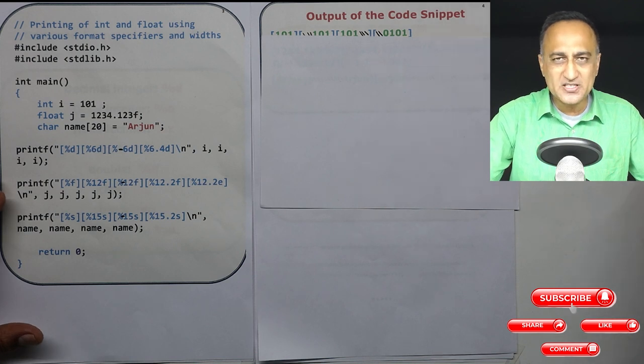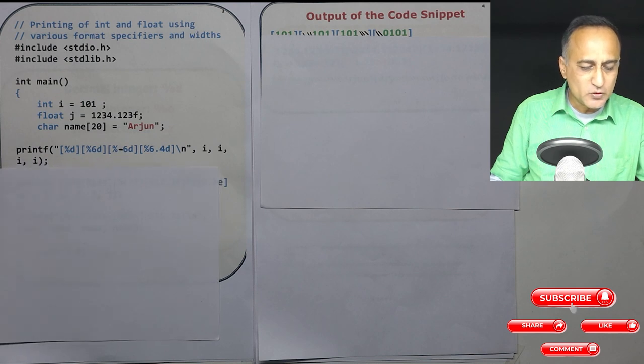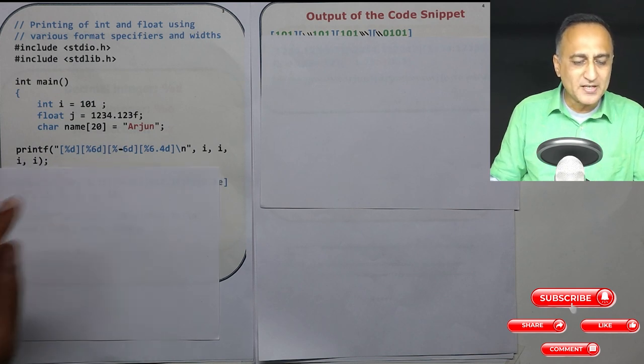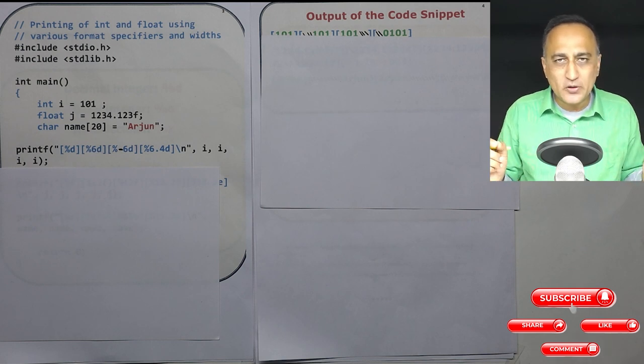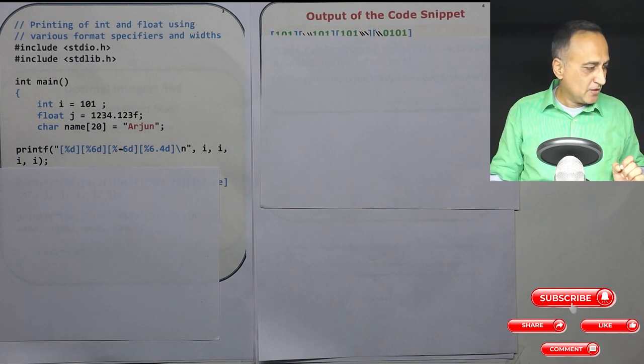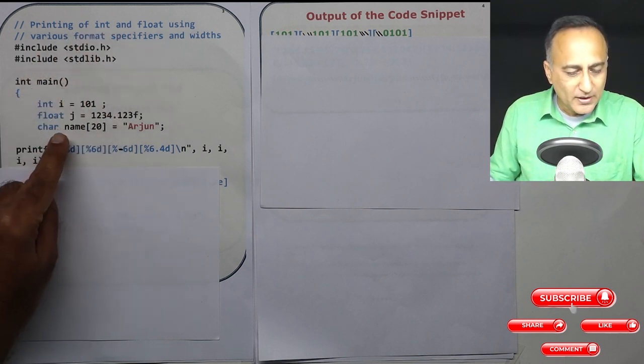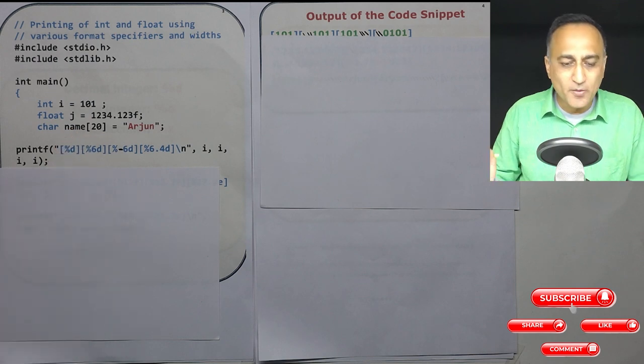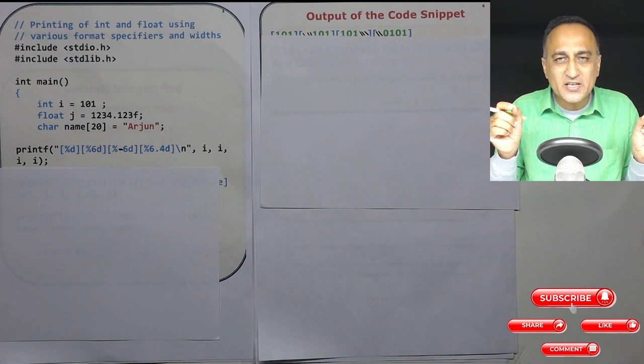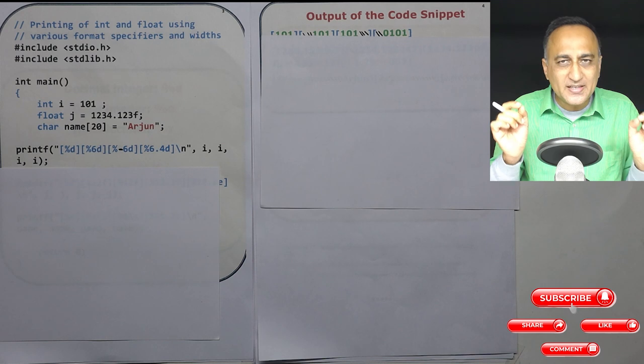and we're taking real numbers and then trying to print the output using different formats of the conversion specifiers and trying to show you how the output really looks like. So what I'm doing here is I'm printing int, float and characters using different format specifiers or conversion specifiers by giving them different widths, which is the amount of space you're giving on the output screen to print the data.